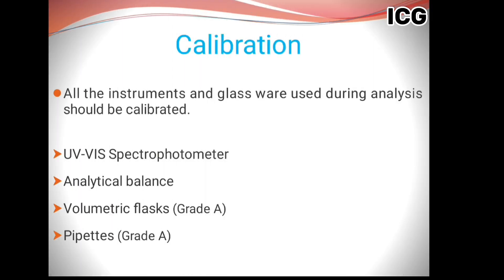Next, if we talk about calibration, it is a very important part of your analysis, especially for your results, because your results have a direct relation with your calibration. If your instrument is not properly calibrated, the credibility of your results will be questioned. So all instruments used during the analysis should be calibrated — the spectrophotometer, weighing balance, volumetric flasks, and glassware — because if these are not calibrated, a non-systematic error will be introduced into your results that will be very difficult to trace.